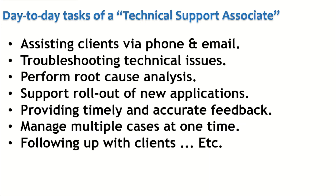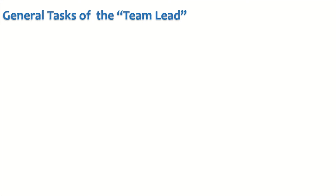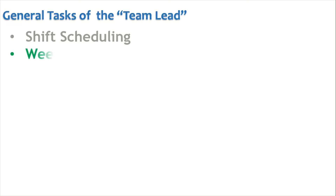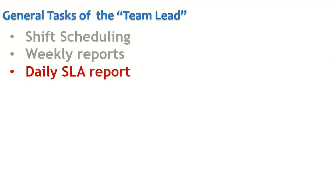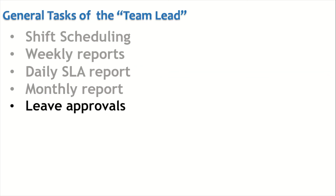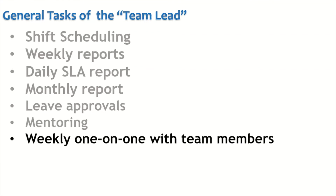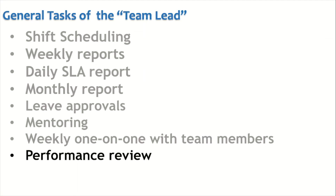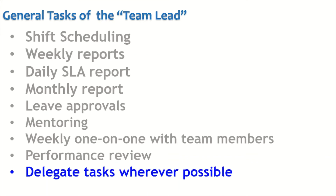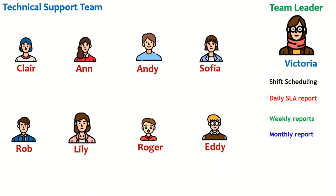These are the common tasks performed by every technical support associate in the team. There are also some tasks which are performed specifically by the team leader — for example, shift scheduling (morning, afternoon, and night shifts), pulling weekly reports, daily SLA reports, monthly reports, leave approvals, mentoring the team, weekly one-on-ones with team members, and performance reviews. The team leader is also responsible for delegating tasks wherever possible.